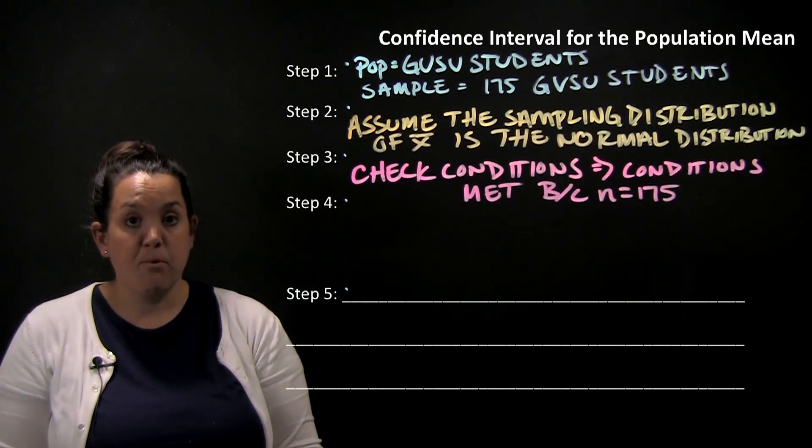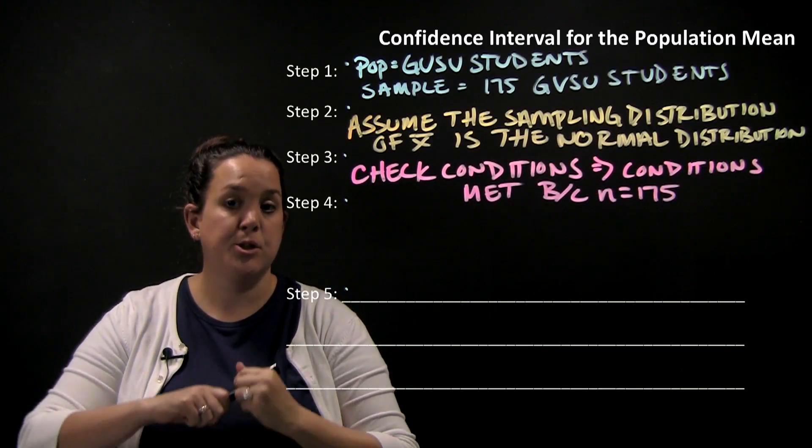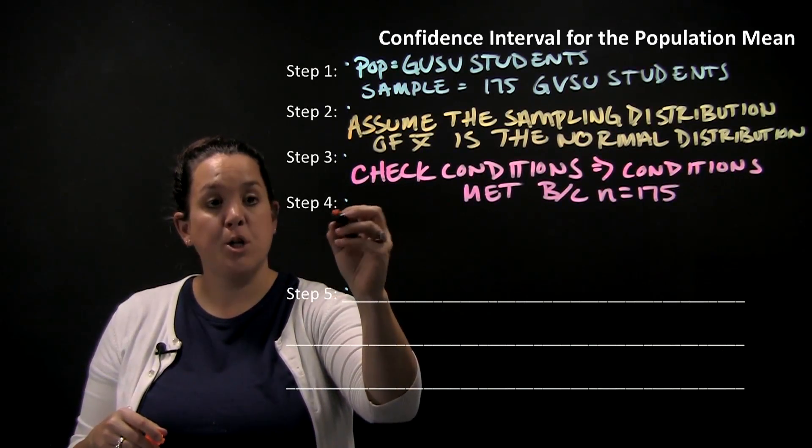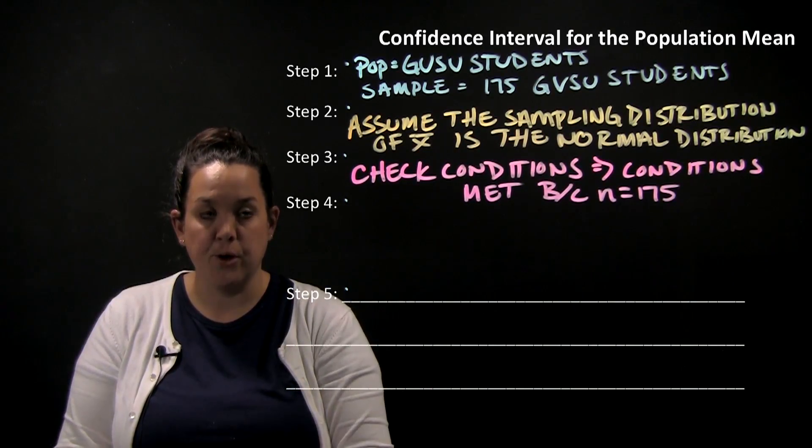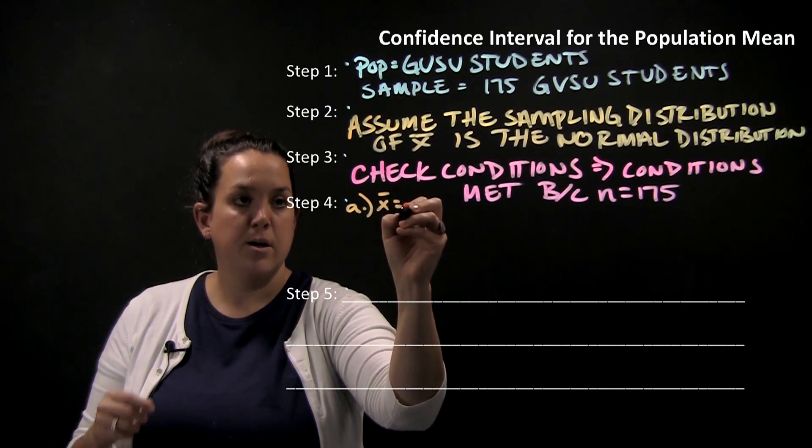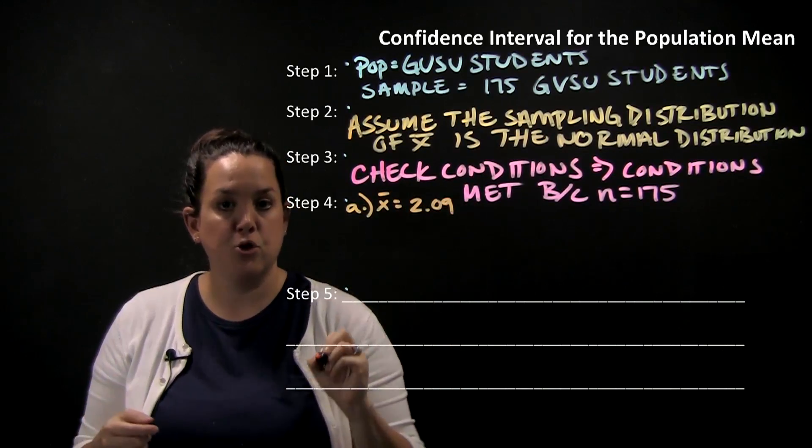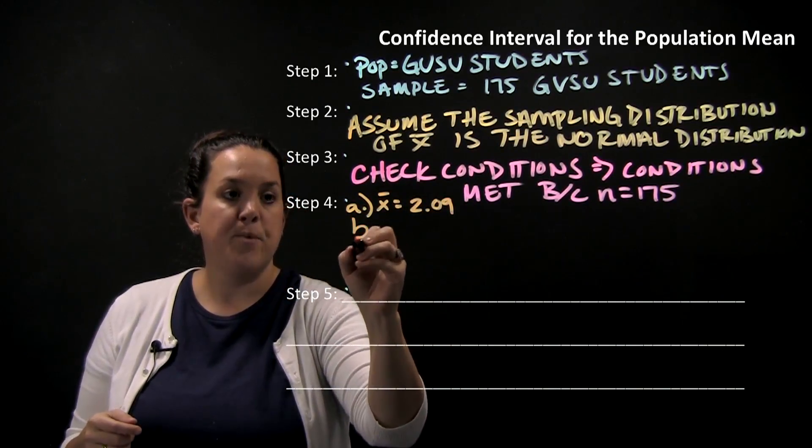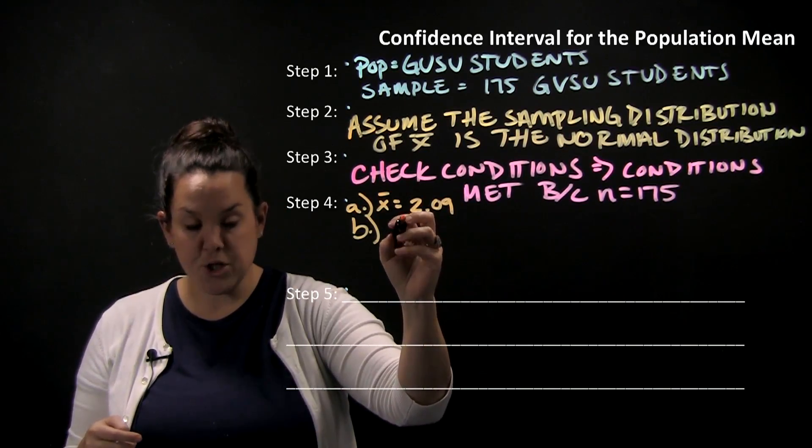Now in step four, because we've verified that our assumptions are met in checking conditions, we can use the formulas that we have to actually calculate the confidence interval. The very first thing that we need to do is identify X bar. According to the notes, our sample mean or X bar is 2.09.